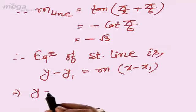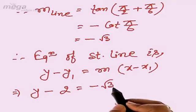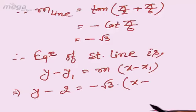So y - 2, where y₁ = 2; m = -√3; x - 1, where x₁ = 1. After simplification,